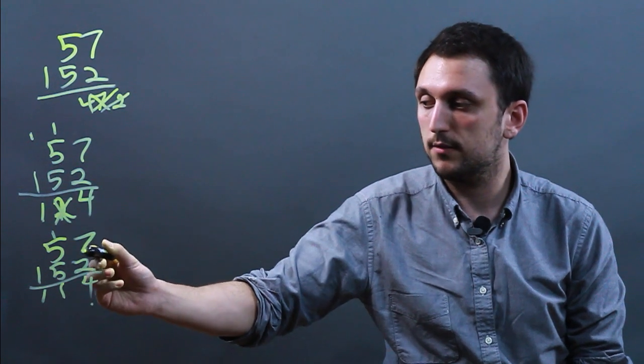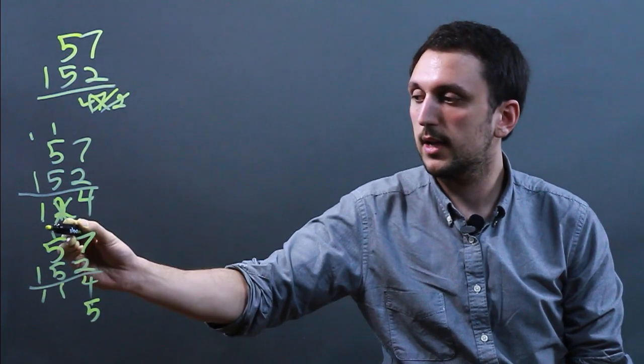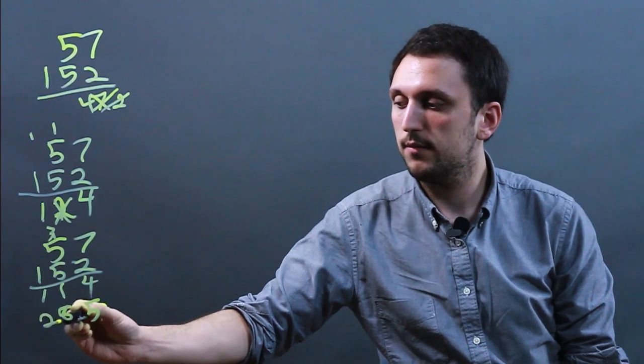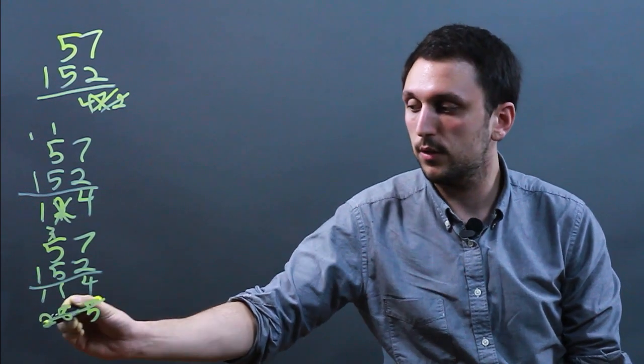If you forget the 0, you may say 7 times 5 is 5, carry the 3, 5 times 5 is 25. So then you get 285, but it actually should be 2850. So this is wrong.